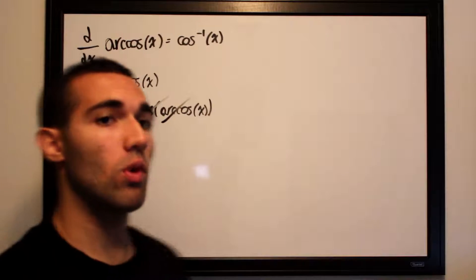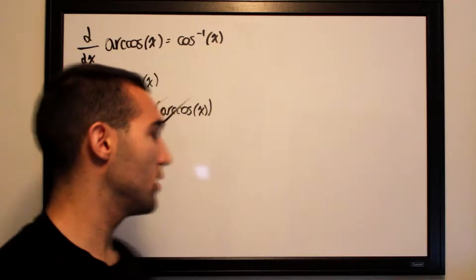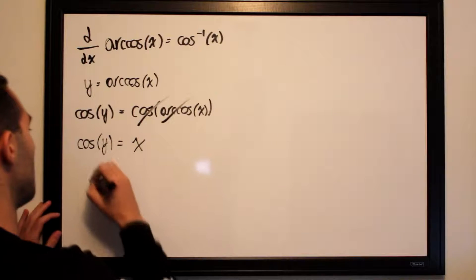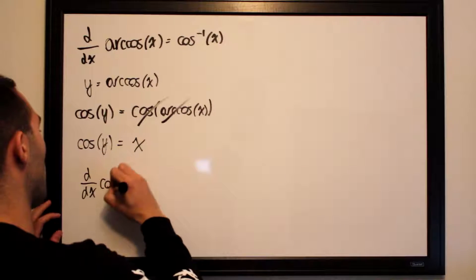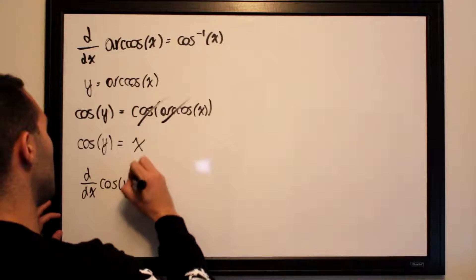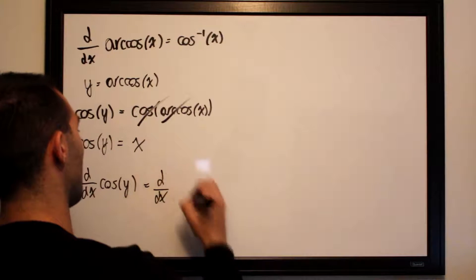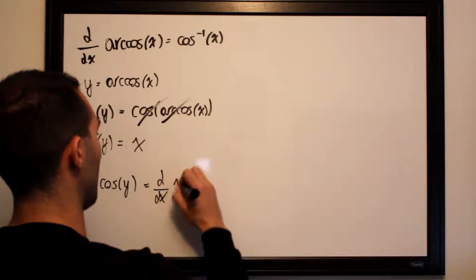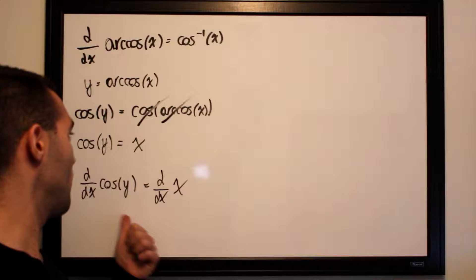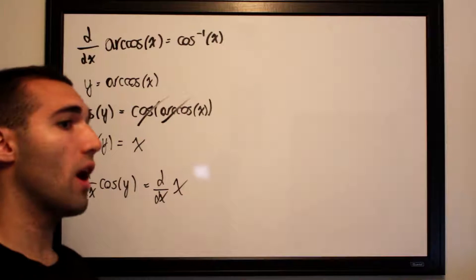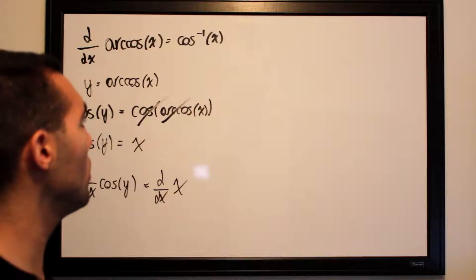Now what we want to do is differentiate both sides with respect to x. So we take d/dx of cosine of y and d/dx of x. We'll be taking the derivative of cosine of y as a function of x using the chain rule.